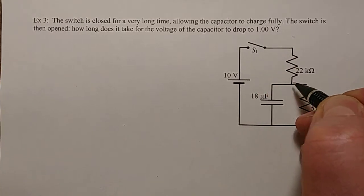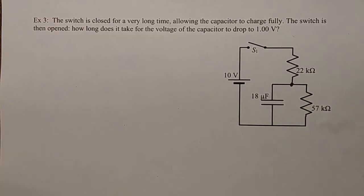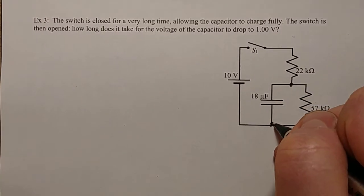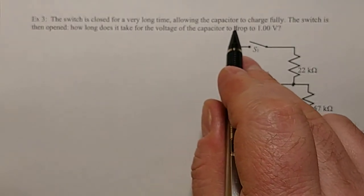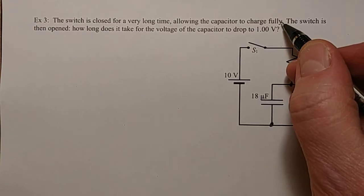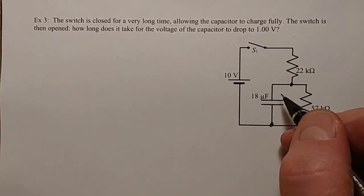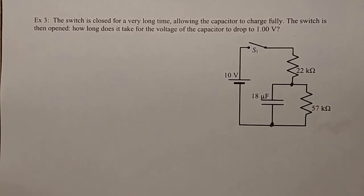The current has to go through this resistor, but then there is a node here where some of it goes this way, some of it goes this way, and then there's another node where the current is combined. But it says the switch is closed for a very long time, allowing the capacitor to charge fully. Remember that if the capacitor charges fully, the capacitor becomes like a block to the current. No more current can flow through there anymore.